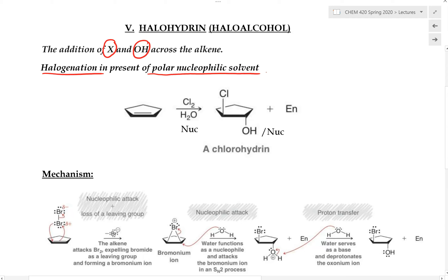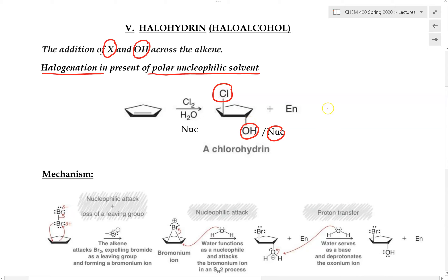This is simply another version of the halogenation reaction in which the solvent is no longer chloroform but is substituted by another polar nucleophilic solvent. In the course of this reaction, a chlorine or another type of halogen is added on one side, and the OH group — or whatever nucleophile the solvent provides — is added to the other carbon. We see an anti-addition of these two groups.